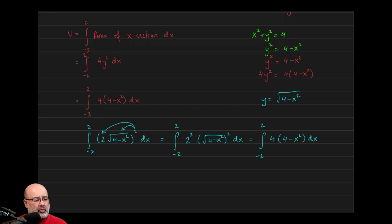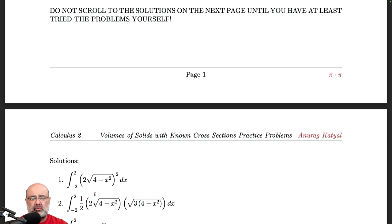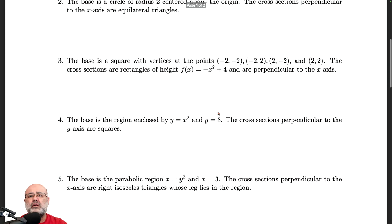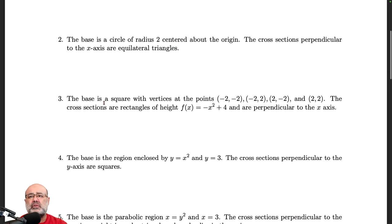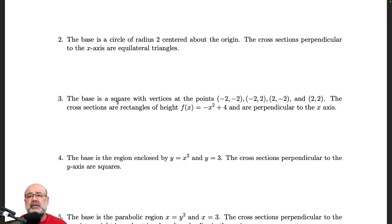The second problem is a circle again, so let's do number 3, where the base is a square. The base is a square with vertices at those labeled points — the center is the origin, going up 2, over 2, down 2, and so on. The cross sections are rectangles, but the height is not a fixed number — it's given by a function that changes based on where you are.